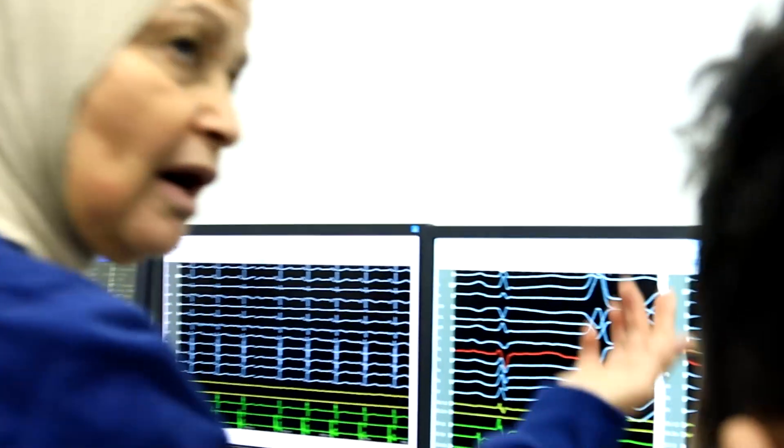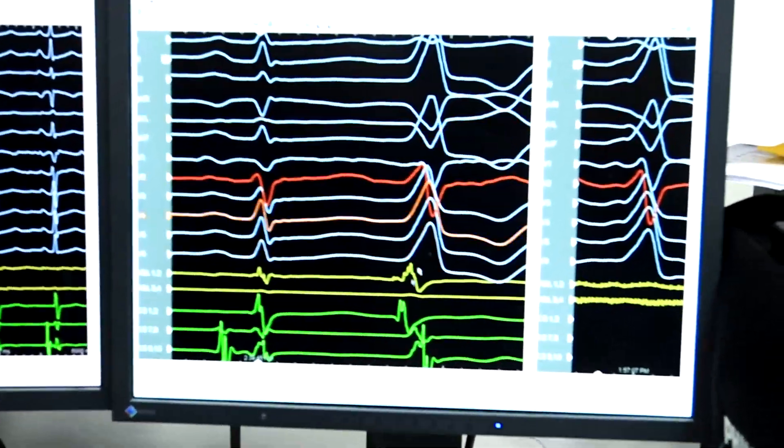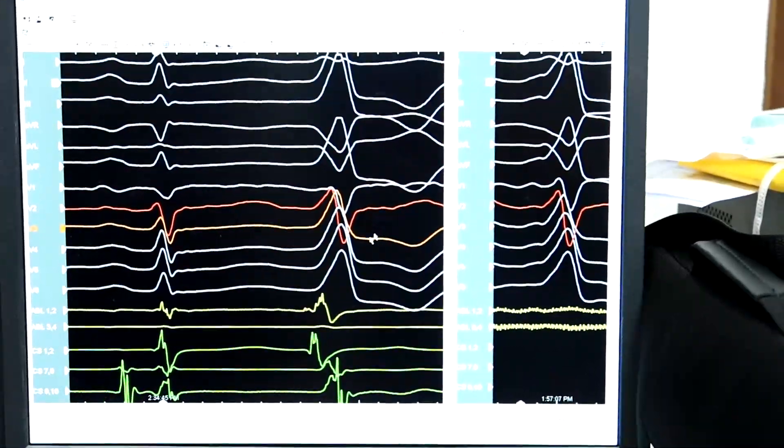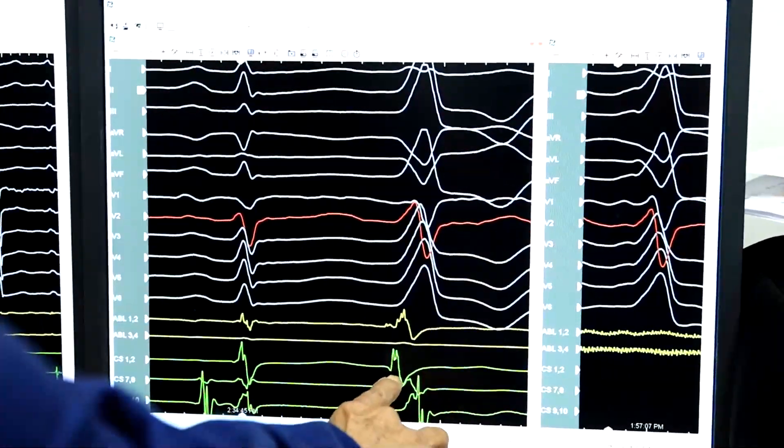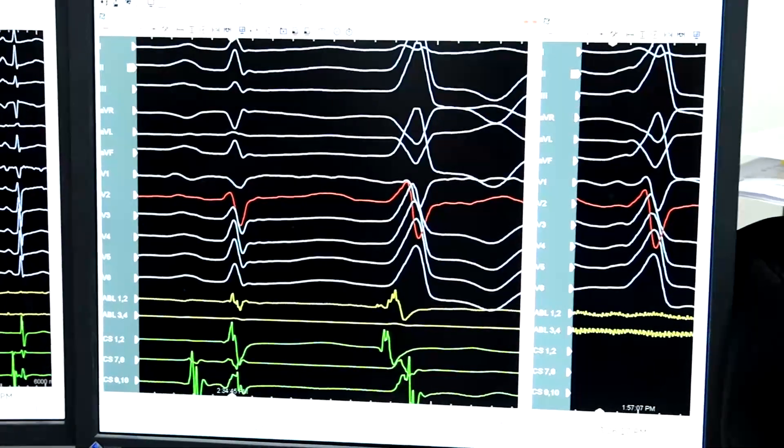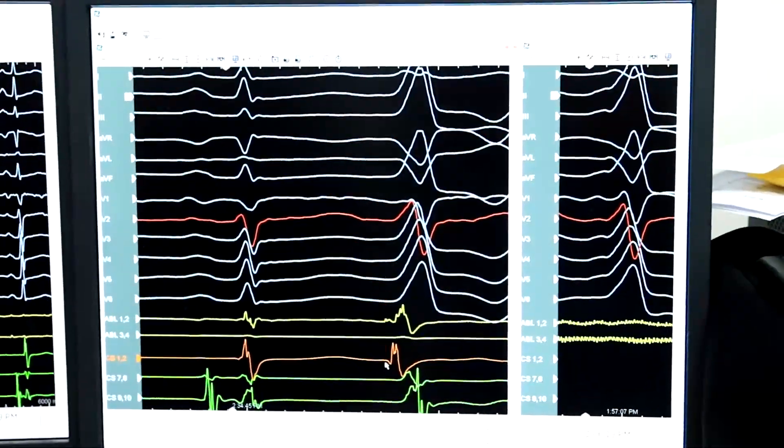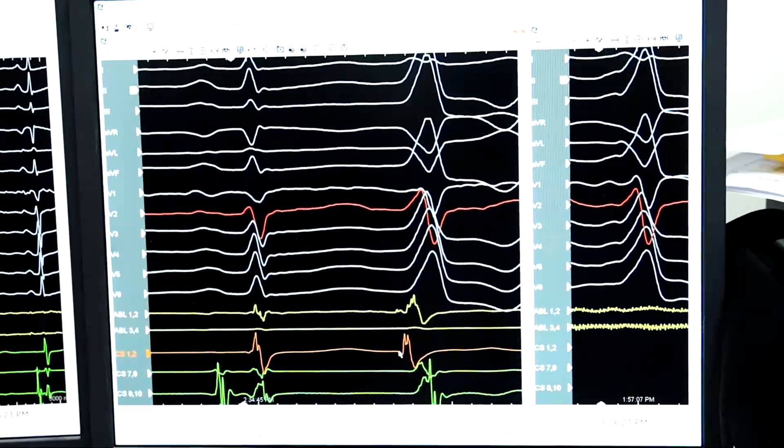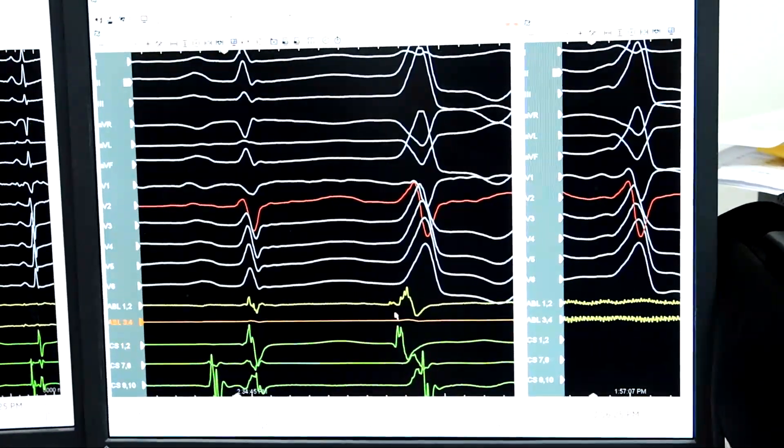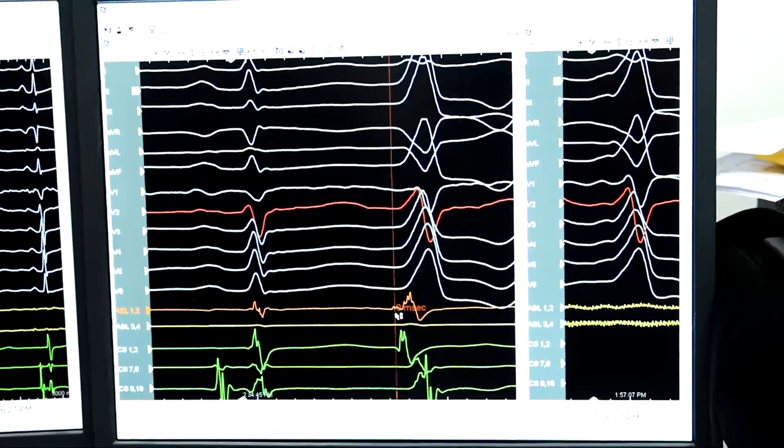We introduced the CS catheter. Actually Salah introduced it high up. We saw it, we'll see it in fluoro. We can see that the distal CS was getting very early ventricular electrogram. We mapped all the localization mainly in the left side, so went to the retrograde approach to the aorta. We mapped it to be in the right coronary cusp.